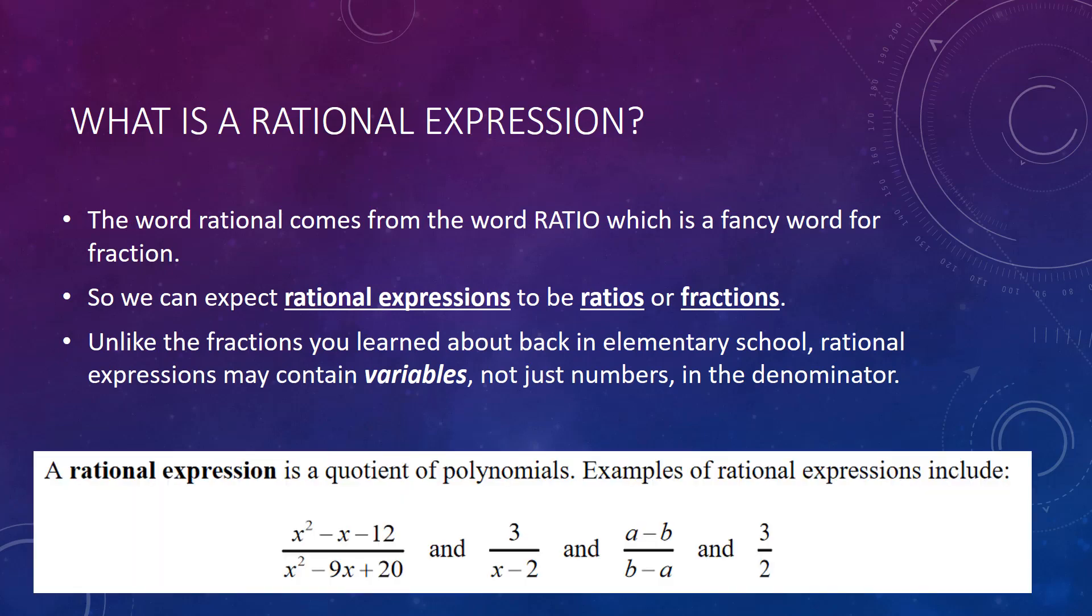So, the textbook defines a rational expression as a quotient, quotient implying division of polynomials. Here are some examples. The first example is x squared minus x minus 12 quantity divided by x squared minus 9x plus 20. Notice there are variables in both the numerator and the denominator. If we have 3 divided by the quantity x minus 2, that is also a rational expression. Then we have a minus b quantity divided by b minus a. Again, there are variables in the denominator. And 3 halves. Notice 3 halves is different from the other expressions because it does not have any variables in the denominator. Despite that, it is still considered a rational expression because 3 is technically a polynomial, and 2 is technically a polynomial, and they are quotient. There's a quotient there. They're being divided.